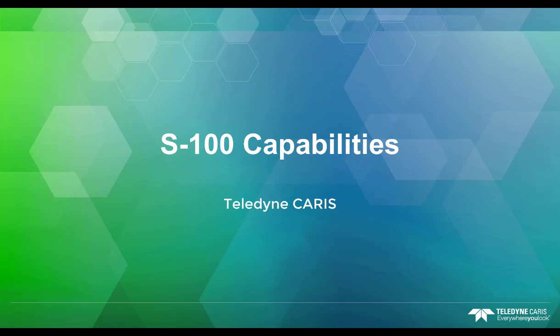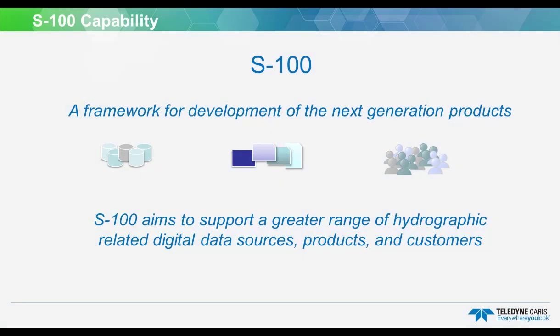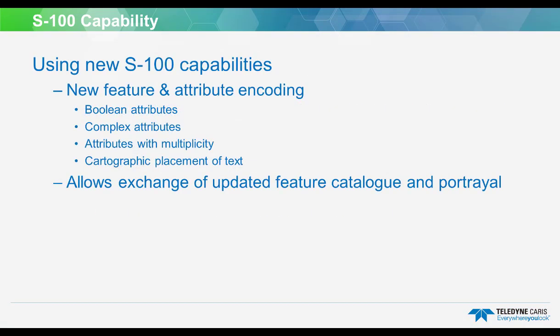The S100 specification's primary goal is to support a greater range of hydrographic data sources, products, and customers. As such, it allows for many new capabilities regarding the encoding of navigationally significant features.